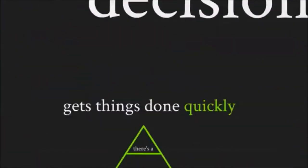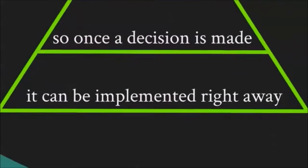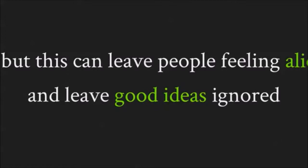Top-down decision-making gets things done quickly. There's a chain of command, so once a decision is made it can be implemented right away. But this can lead to people feeling alienated from the decision-making process and leave good ideas ignored.